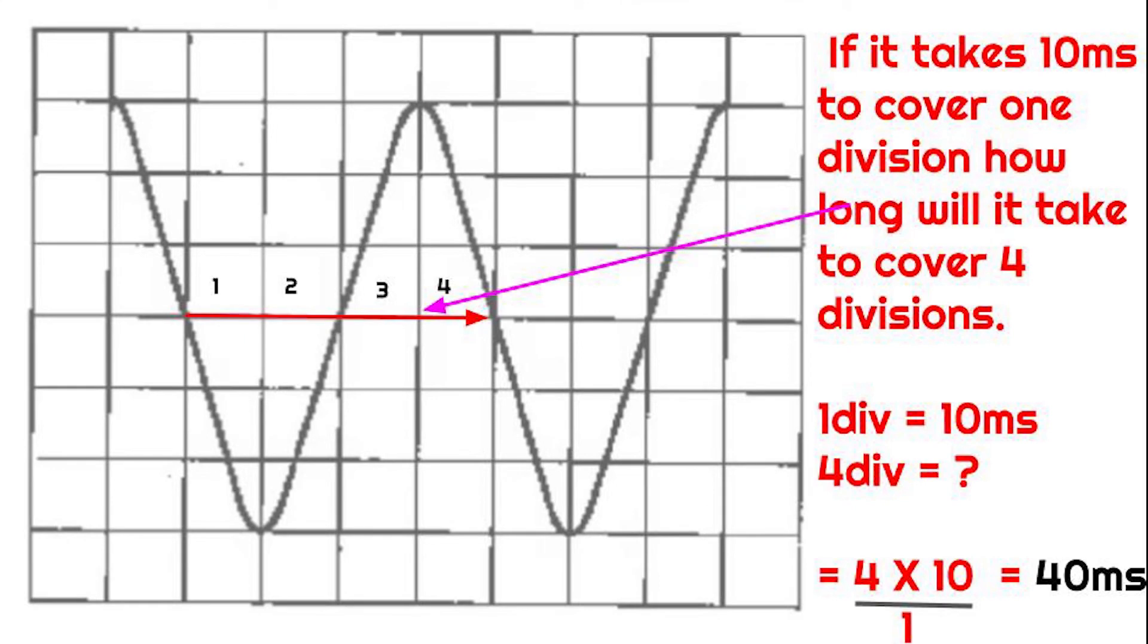Thus, if the spot takes 10 milliseconds to cover one division, how long will it take to cover four divisions? It's simply going to be 10 milliseconds multiplied by four divisions. That would be 40 milliseconds.